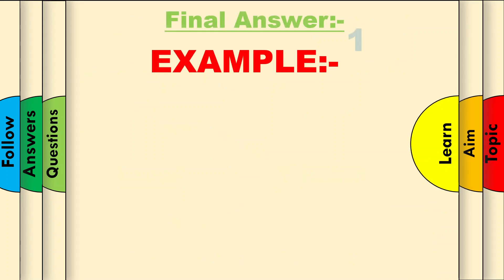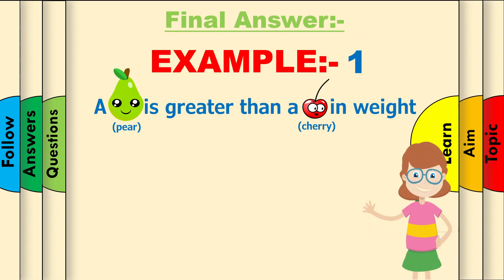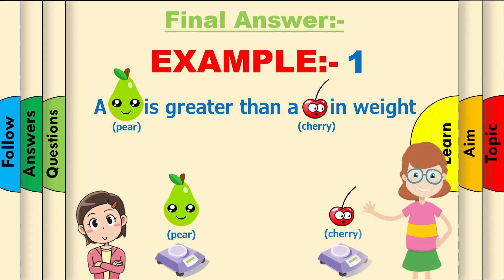Final answer for example 1. A pear is greater than a cherry in weight. Let's use method 1. Draw the tree and a flick. Well done!